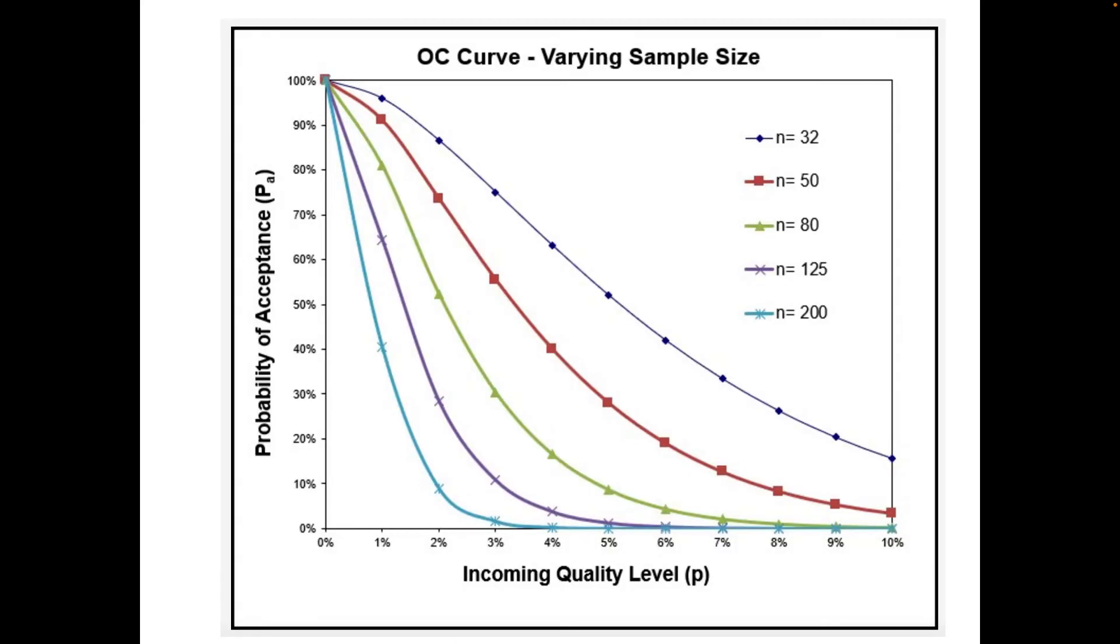The other thing about the curves is they change depending on the sample size. You can see all these colors are different sample sizes of n of 32, 50, 80, 125, 200. You can see that if we have a two percent quality in our lot, the probability of accepting it if we have a 200 sample curve is only around 10 percent. And if we have a sample that's 32, the probability of accepting it is 90 percent. So you can see that we can distinguish these values a little bit better.